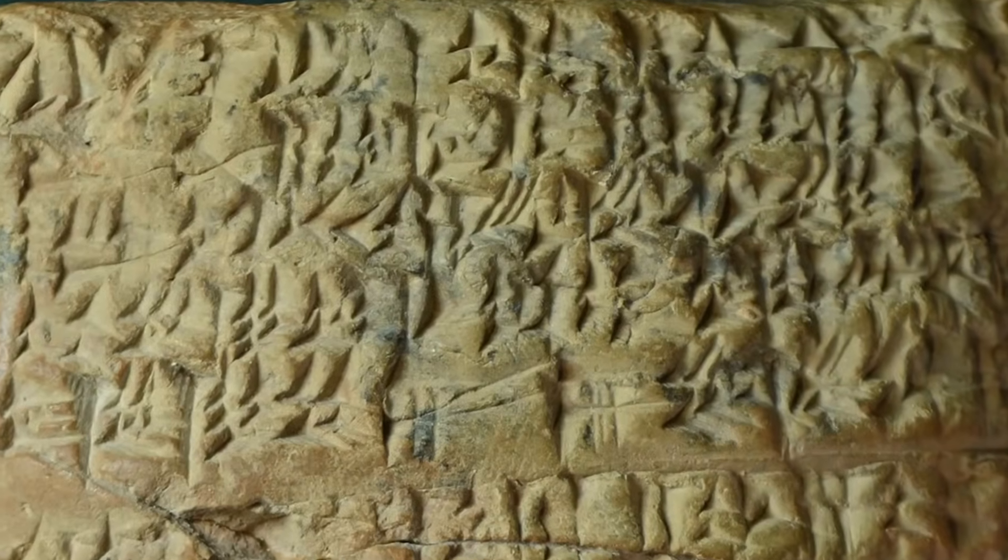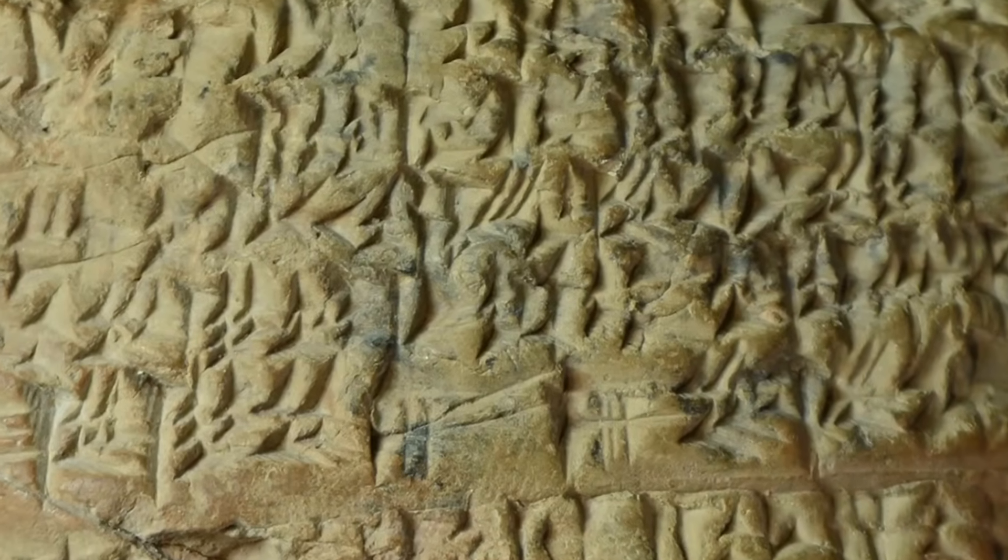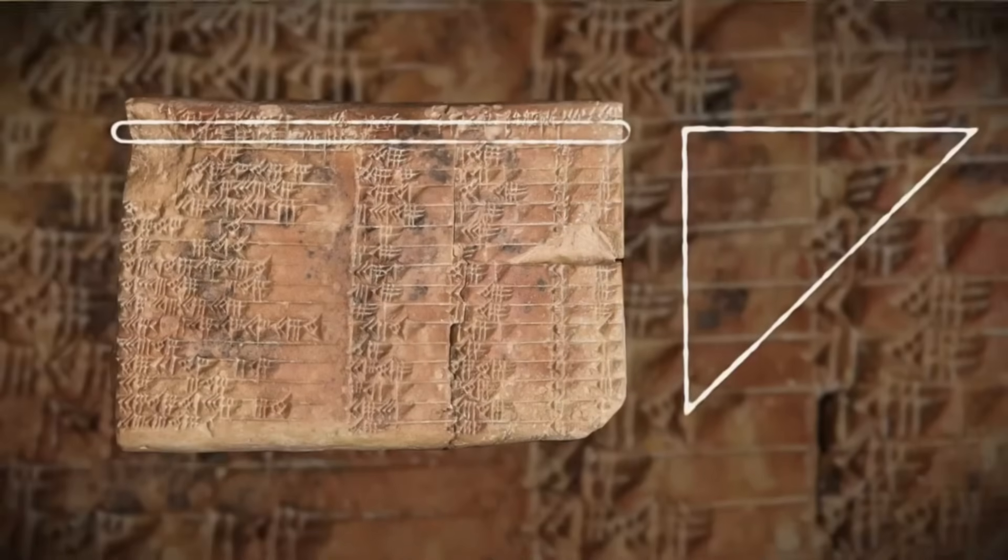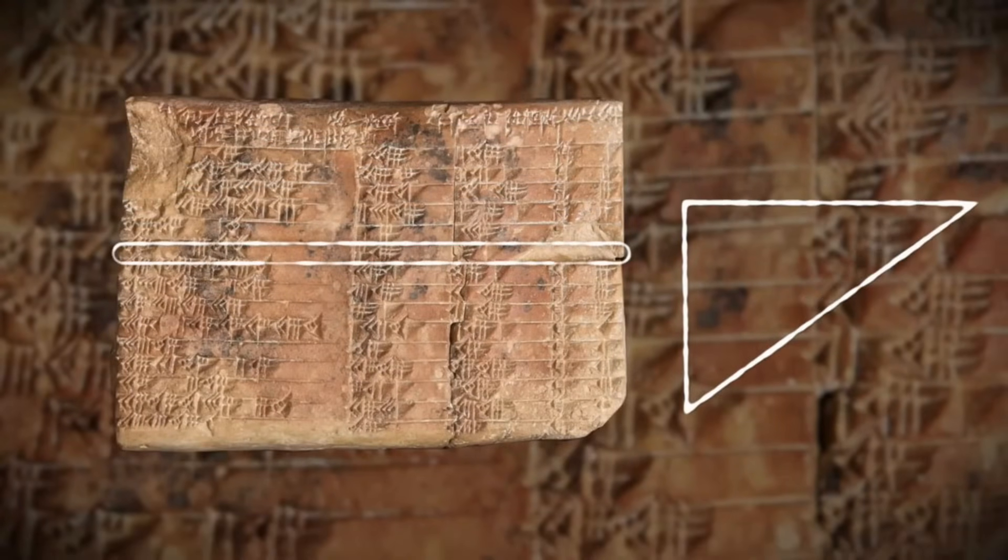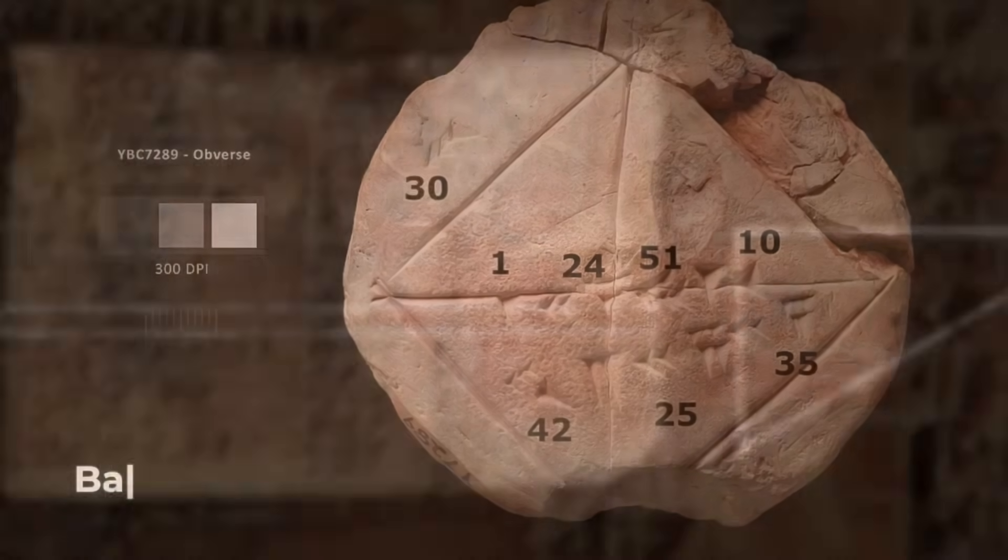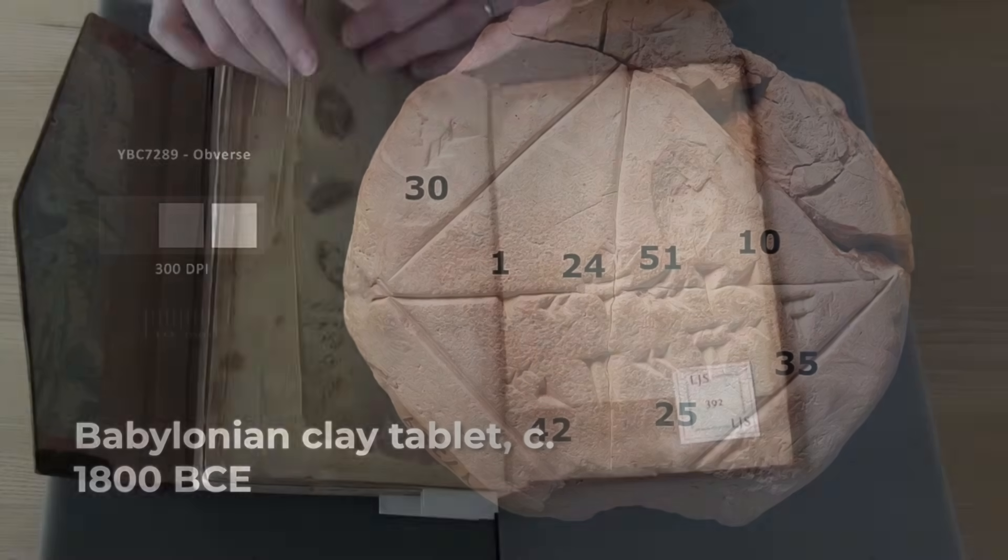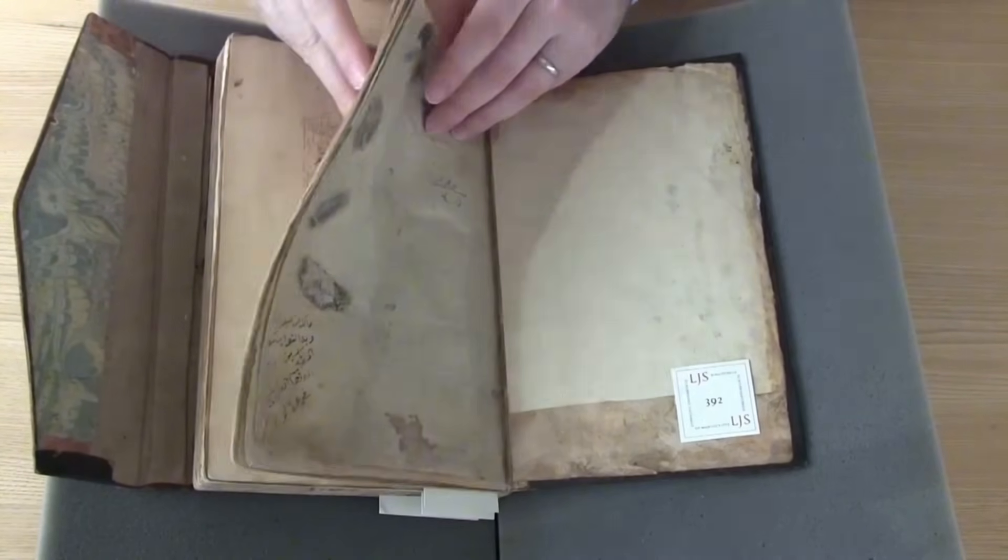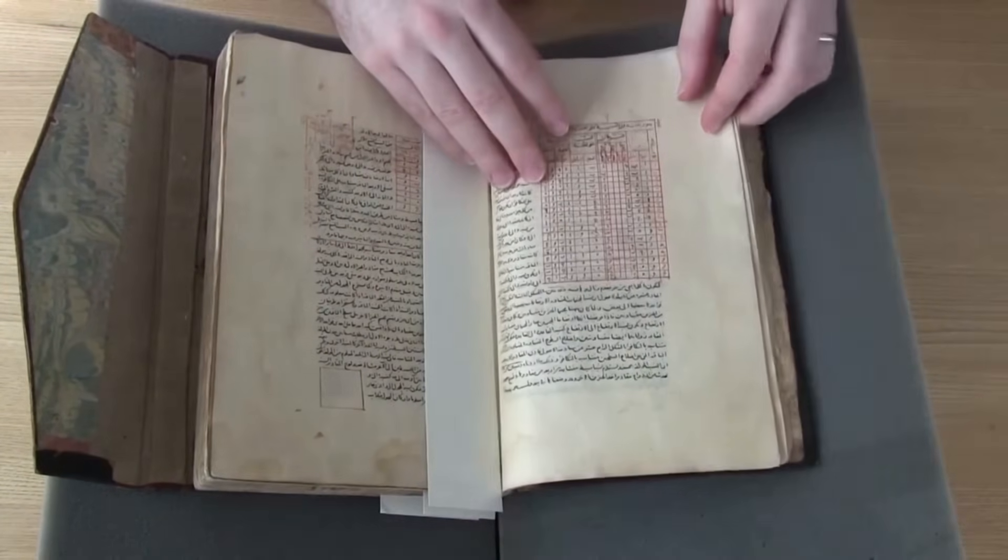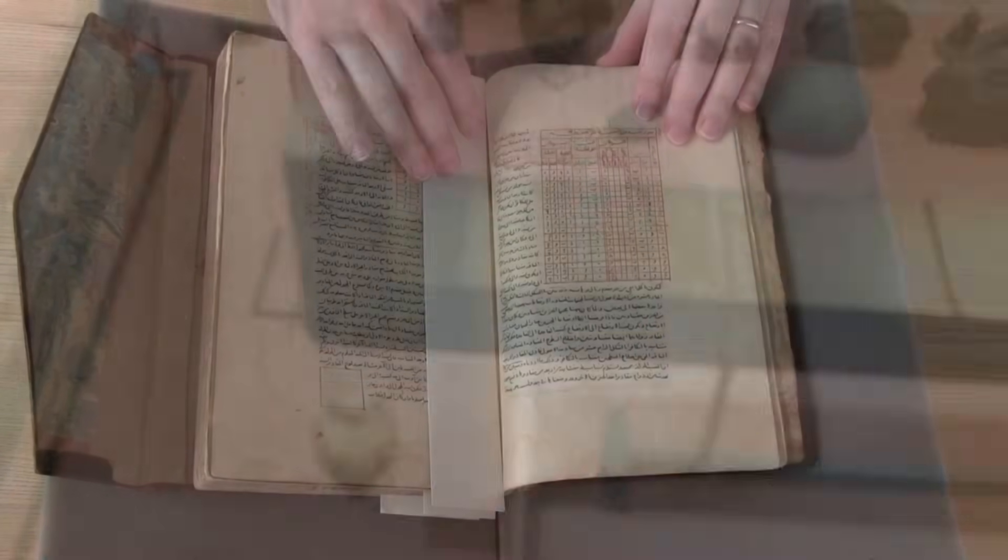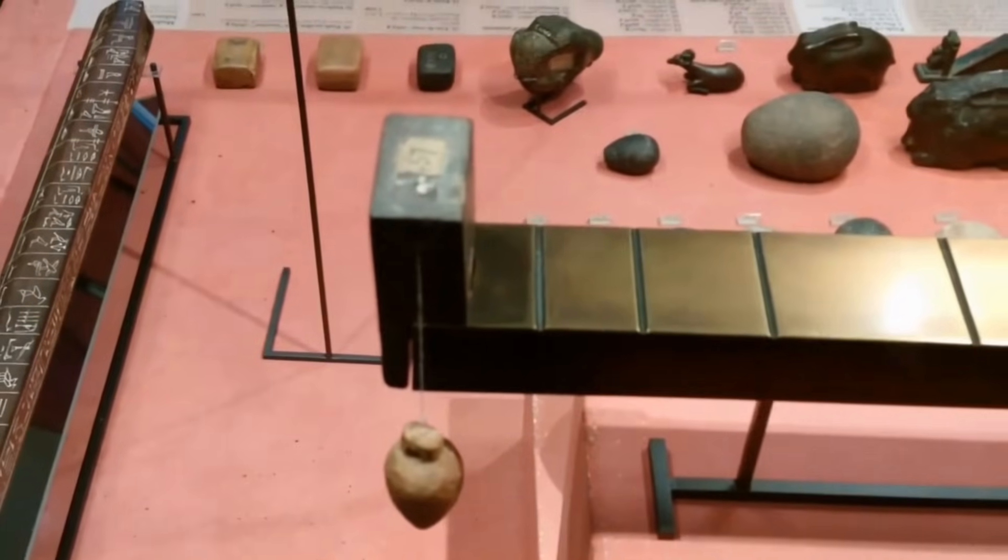On a Babylonian clay tablet over 3,800 years old, scribes used base 60 to solve geometric problems, a system chosen for its unmatched divisibility. That practical math shaped how the Babylonians divided circles into 360 degrees, and centuries later, how Greeks like Ptolemy described angles as minutes and seconds of arc. Egyptian astronomers split the day into 24 hours, while Greek and Islamic scholars kept refining these ideas, preserving the sexagesimal tradition.